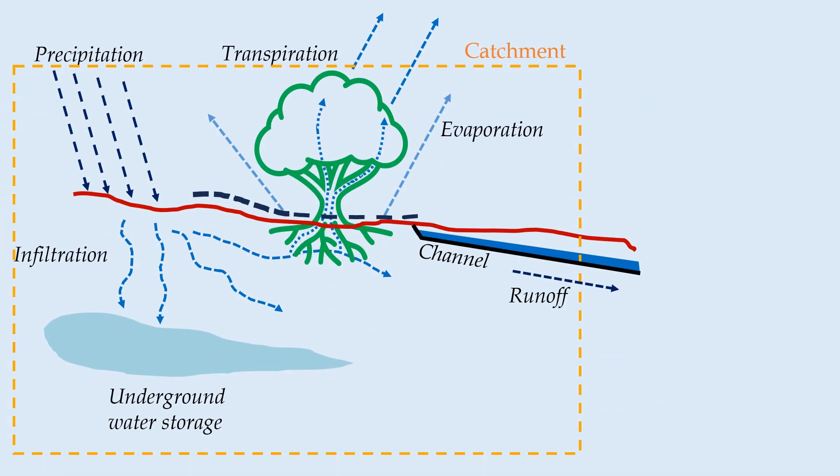Runoff is the outflow of precipitation from a catchment. It is usually conveyed via surface channels.